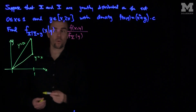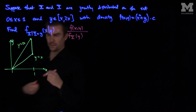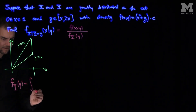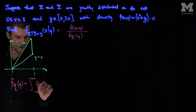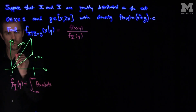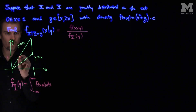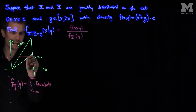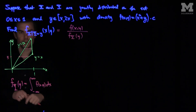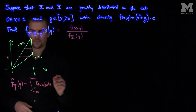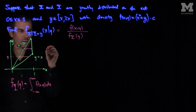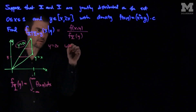Now I need to figure out f_Y(y). f_Y(y) will be the integral from negative infinity to infinity of f(x,y) dx. We need to find the range of x in this region given that y equals y. So what will x go from? x will go from the left boundary up to either the right boundary line.